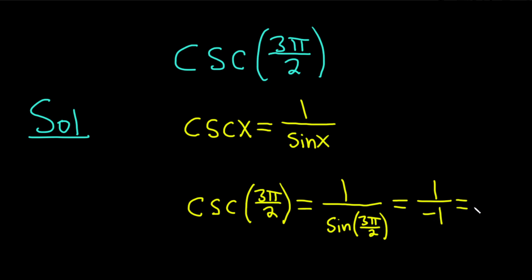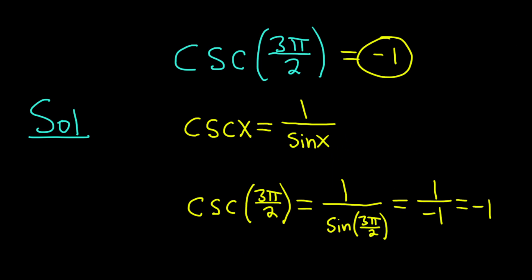So this is 1 over negative 1, which gives us negative 1. The cosecant of 3π/2 is equal to negative 1. Hopefully this video has been helpful and you've learned some math. Good luck.